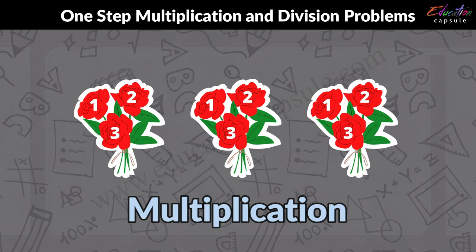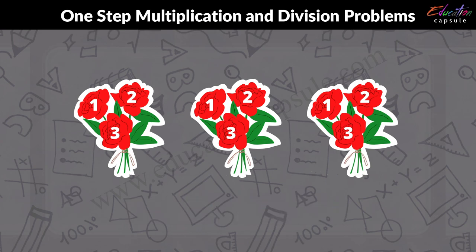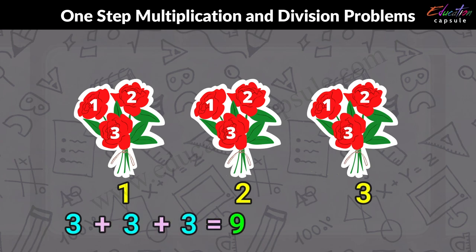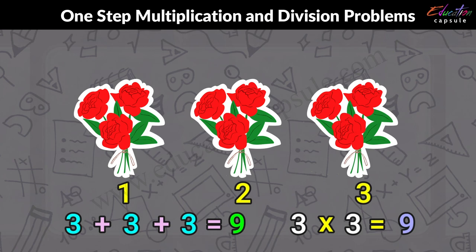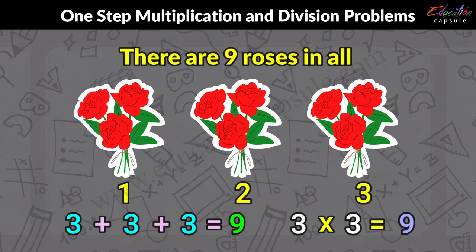There are three roses in a bouquet. In total, there are three bouquets, so the total number is 3 + 3 + 3, which equals 9. Or we can do 3 times 3, which equals 9. So there are nine roses in all.